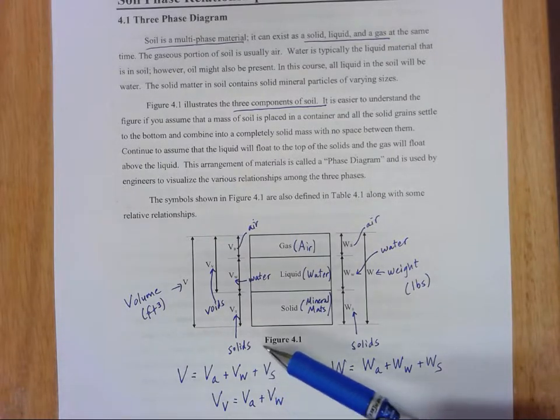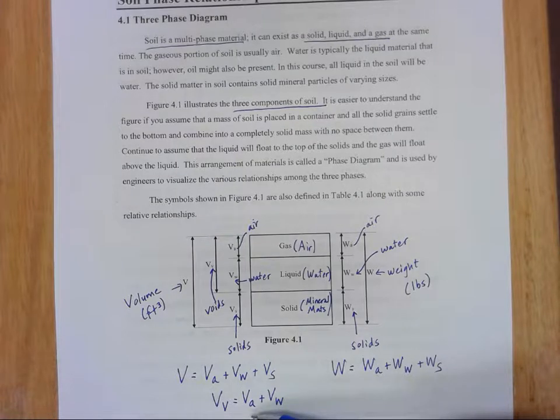So some of those voids might be filled with air, and some of those voids might be filled with water. But we can know that the volume of the voids is equal to the volume of air, plus the volume of water.